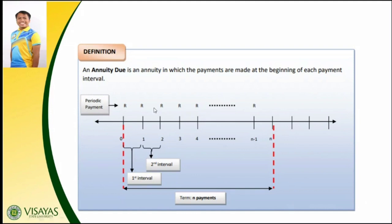On our screen you can find an illustration of an annuity due. It is defined as an annuity in which the payments are made at the beginning of each payment interval. As you can see in our number line, the periodic payment is denoted by R, and you have the term in years. From zero year to the first year is your interval, meaning your first payment begins at the beginning of the interval — from zero year, that will be your first payment. So you will start paying your dues here.